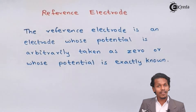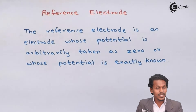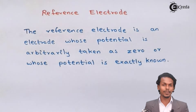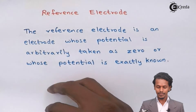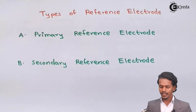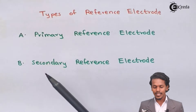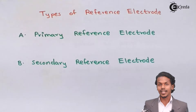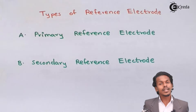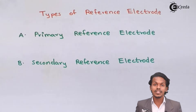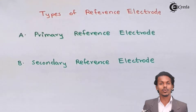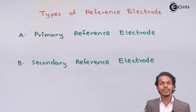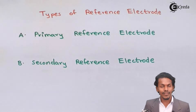Now that you have understood what a reference electrode is, let me tell you that reference electrodes are of two types. One is the primary reference electrode, while the other is the secondary reference electrode. Let us discuss what each one is in a detailed manner, including their definitions and examples.